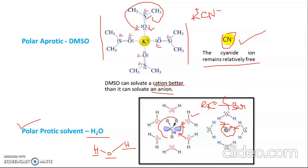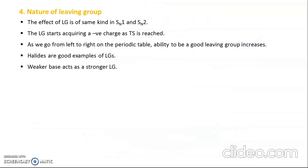The reason DMSO cannot solvate CN⁻ well is that the δ⁺ on sulfur is less effective than the δ⁺ on hydrogen for solvating anions, because sulfur is more electronegative than hydrogen. So the partial positive charge on hydrogen is greater, making polar protic solvents better at solvating anions. The bottom line: polar aprotic solvents stabilize only cations, while polar protic solvents stabilize both. Polar protic solvents help SN1 by quickly breaking the R₃C–Br bond to form the carbocation; the faster you get the carbocation, the better the SN1 reaction rate.